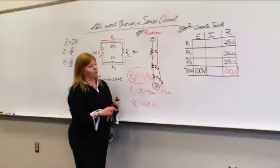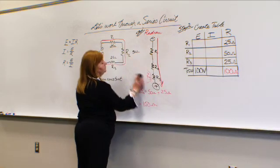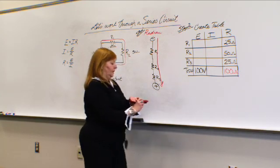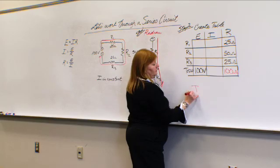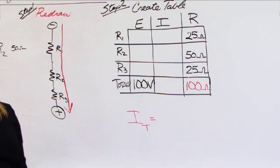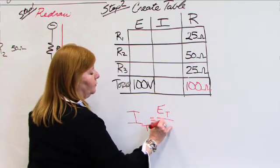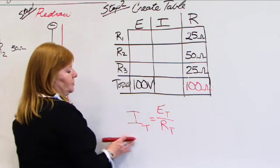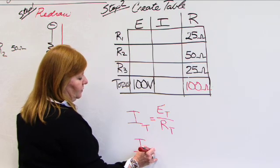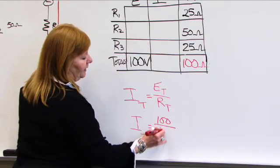It has one and only one current flow path, and it is the same through each of these resistors. So I'm going to clean this up a little bit, and we're going to continue to work our problem. Looking at the table, how do we figure out total current? To figure out total current, we need to have two pieces of that three-piece puzzle. We have it.